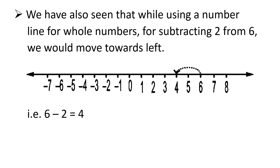We have also seen that while using a number line for whole numbers, for subtracting 2 from 6, we would move towards the left. That is, we start from 6 and then move two steps to the left of 6. We reach at 4 as shown in the figure. So 6 minus 2 is equal to 4.